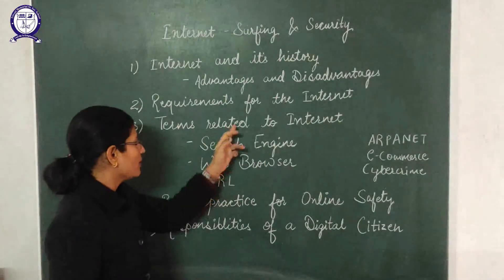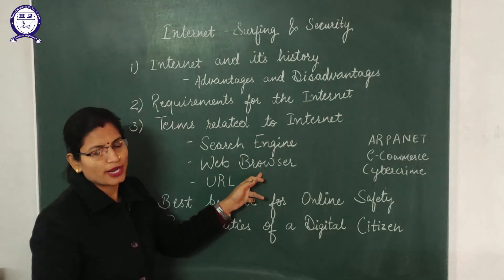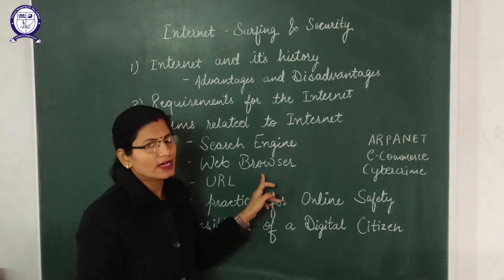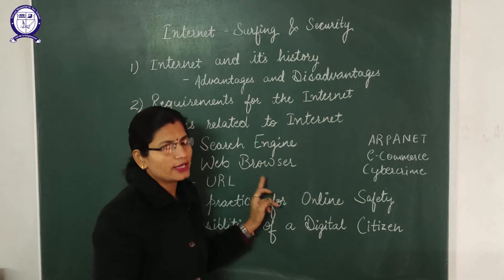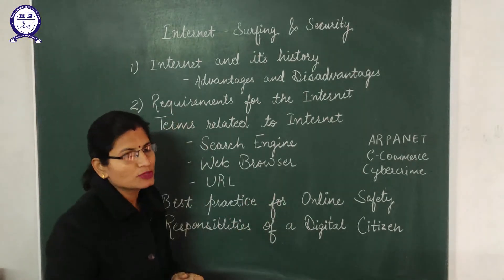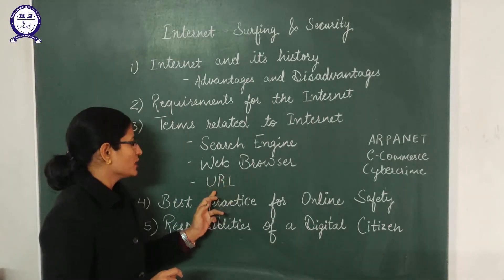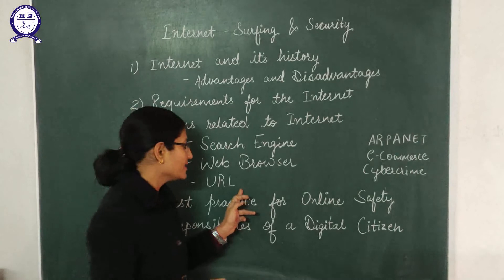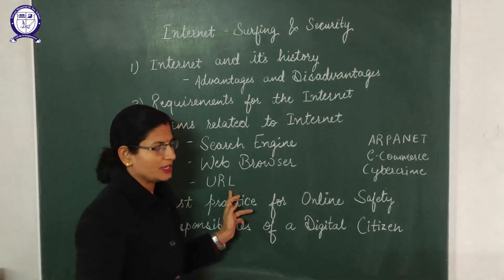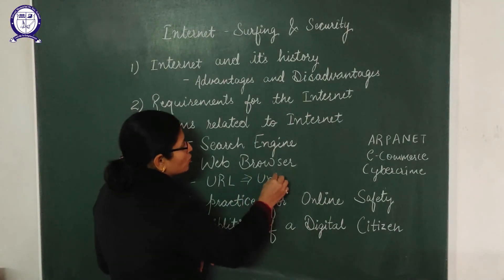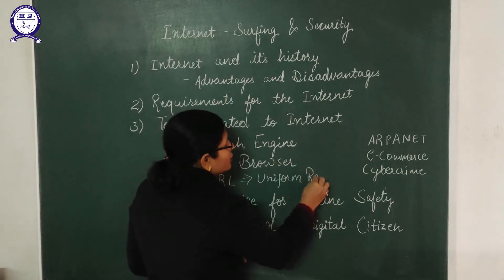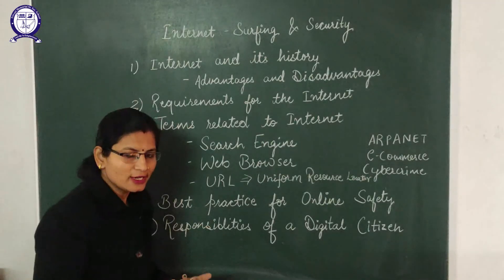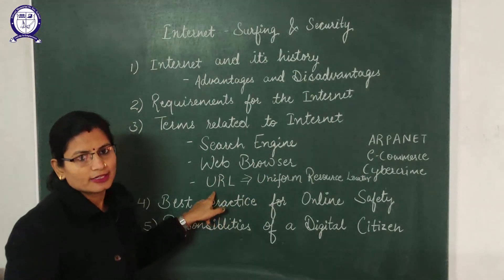The second term is web browser. A web browser is also a program used to browse web pages, and these are softwares developed by different companies — for example, Google Chrome, developed by Google. The first graphical web browser which was developed is Mosaic. The third term is URL. URL stands for Uniform Resource Locator — it is the unique address which we enter into our web browser to go to any particular page or website.